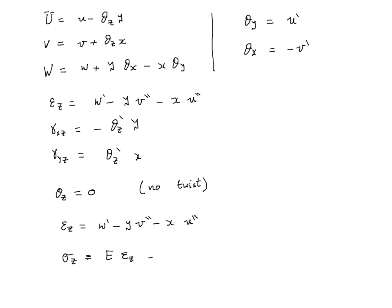So based on the assumption of only single non-zero normal stress, which is sigma_z, we can calculate sigma_z to be nothing other than E epsilon_z, and this will give us E w prime minus Ey v double prime minus Ex u double prime.